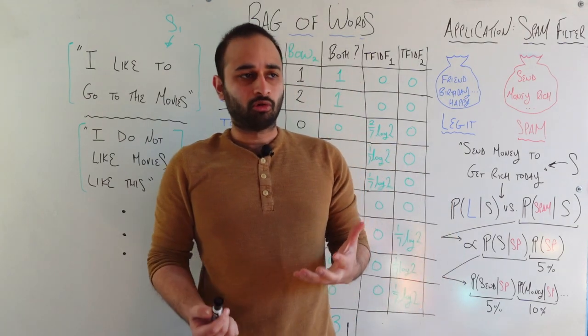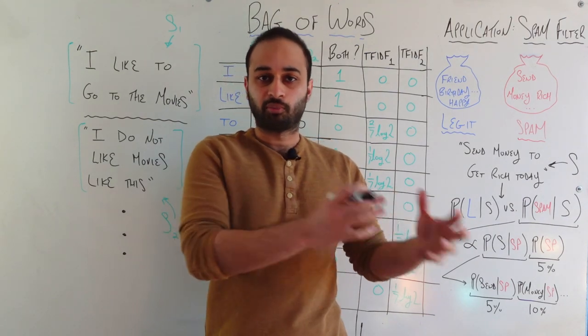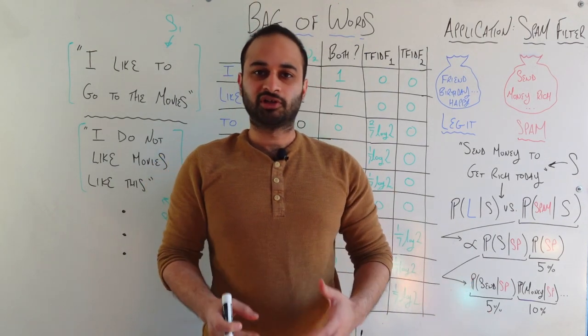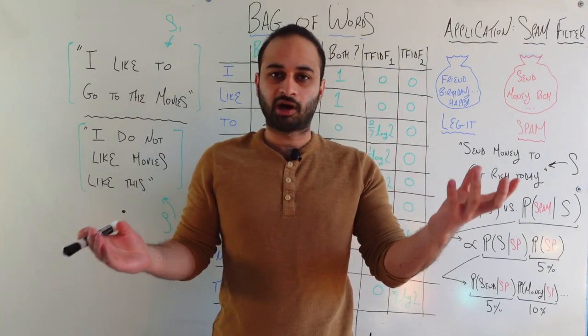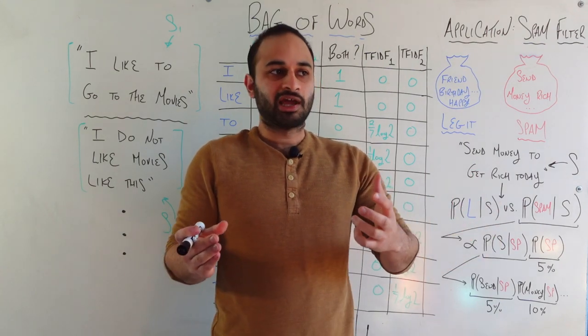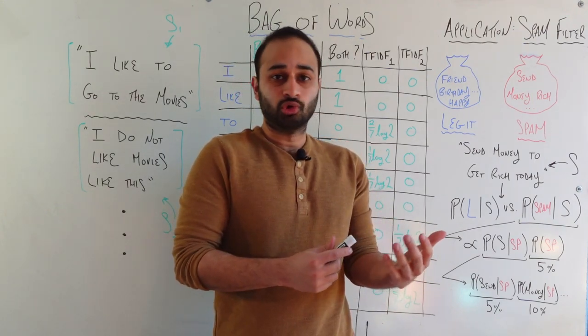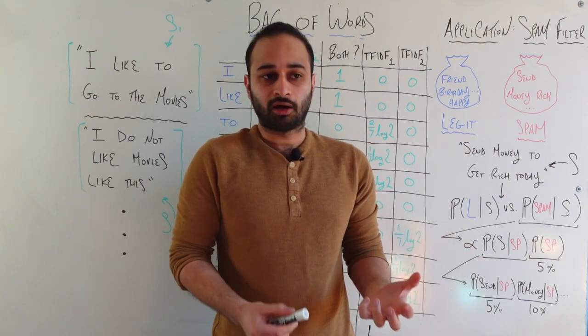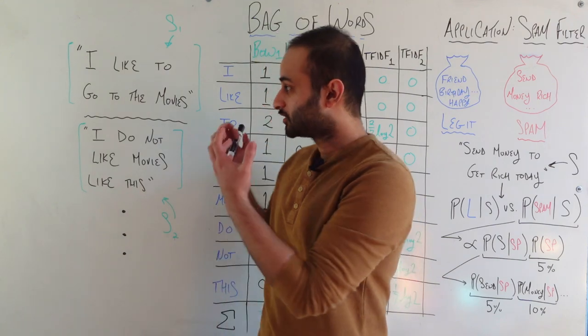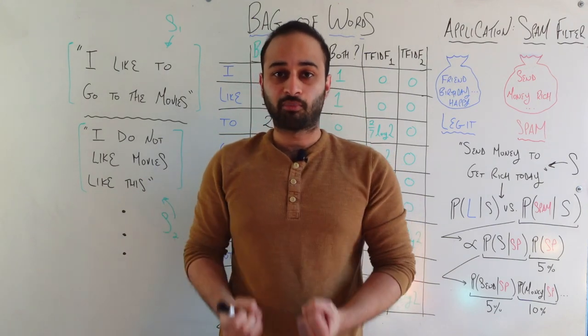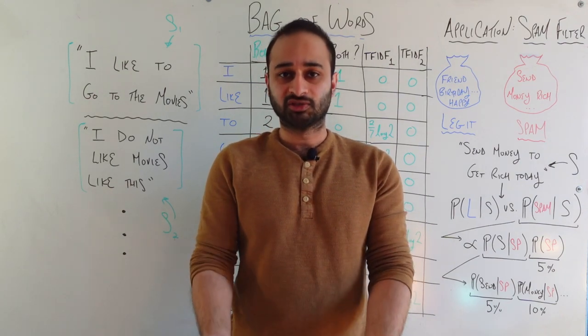So bag of words, the goal is to take a sentence and turn it into some kind of numbers. One of the initial goals in natural language processing is that we have some sentence or paragraph or speech and we would like to extract some kind of insights or do some kind of prediction on it. But most of the tools we've developed in machine learning cannot take in strings or words and do anything meaningful. So a natural first step is to take that string of words and extract some kind of meaningful numbers that's a good representation of that string of words. And the easiest way to do that is bag of words.